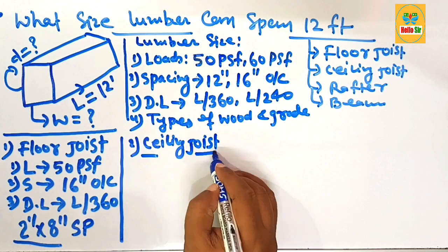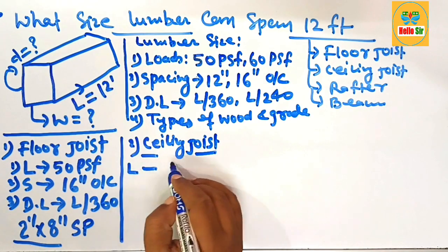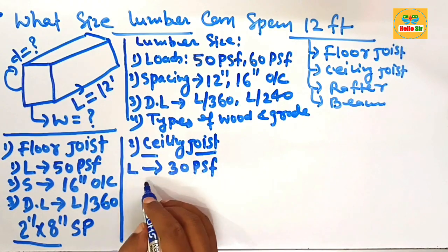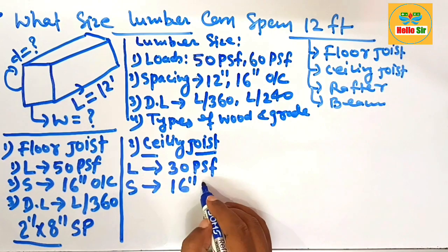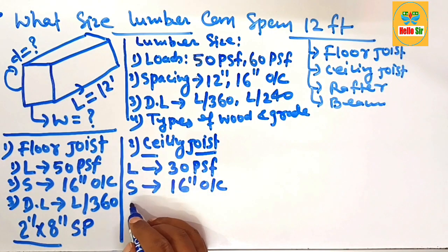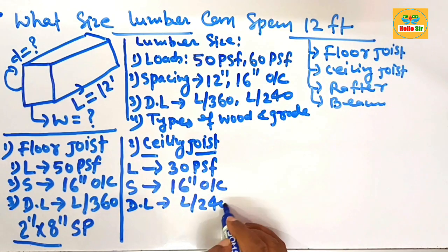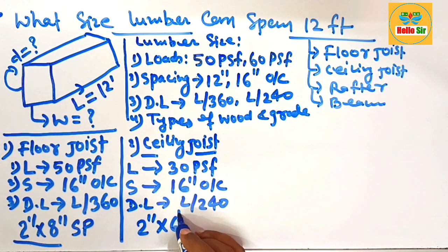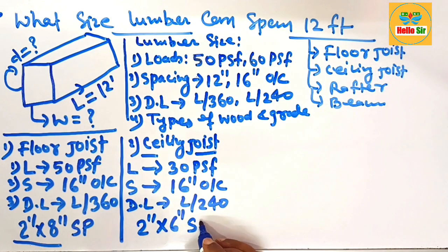For ceiling joist size required to span 12 feet: the ceiling joist carries the load of the ceiling and roof, with a load of about 30 pounds per square foot. The spacing between the ceiling joists is 16 inches on center, and the deflection limit is L/240. You should use a 2-inch by 6-inch dimensional lumber of southern pine wood species.